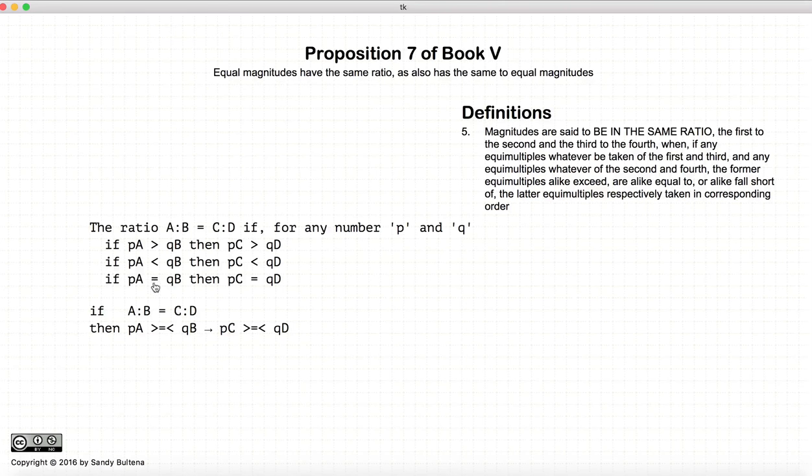Now this is a long-winded way of writing it. So this is the short form. pA greater than qB implies that pC is greater than qD. pA is equal to qB implies that pC is equal to qD. And then the less than. So basically pA greater equal or less than qB implies that pC is greater equal or less than qD. This is how we write this all mess.